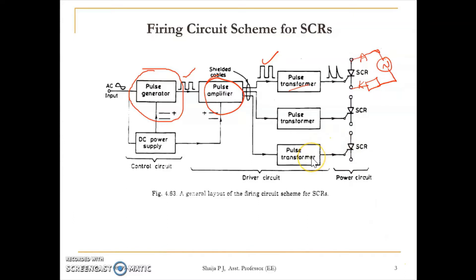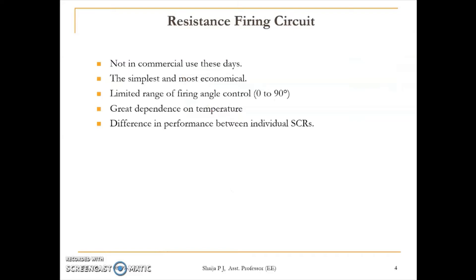The pulse transformer isolates the low-power electronic circuit from the high-power circuit. Now, moving on to different firing circuits — first, the resistance firing circuit. It is the simplest and most economical one. Its main drawbacks are a limited firing angle control range of up to 90 degrees only, great temperature dependence, and performance differences between individual SCRs.